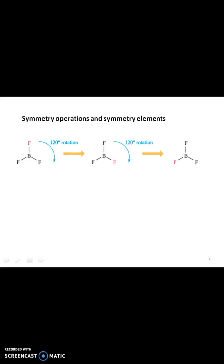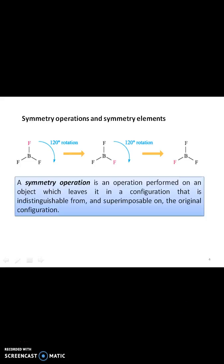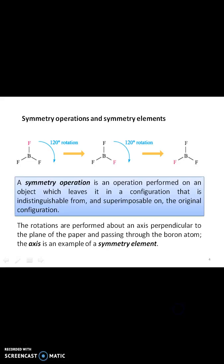Symmetry operations and symmetry elements. Consider the molecule BF3. 120° rotation gives rise to a change in position of the fluorine atom. Again, 120° rotation leads to a molecule which is indistinguishable from the original molecule. This type of operation is performed about an axis perpendicular to the plane of paper and passing through the boron atom. The axis is an example of a symmetry element.